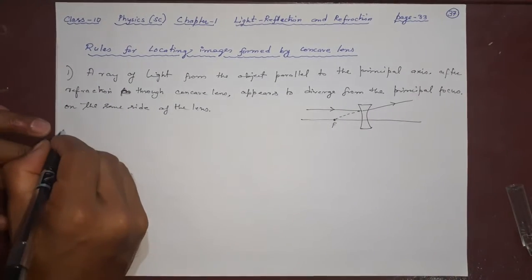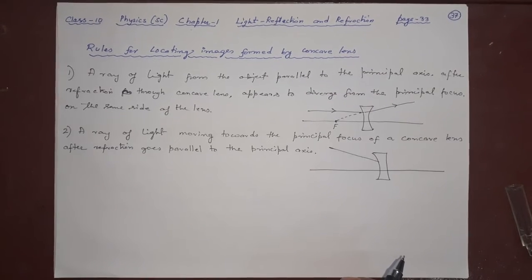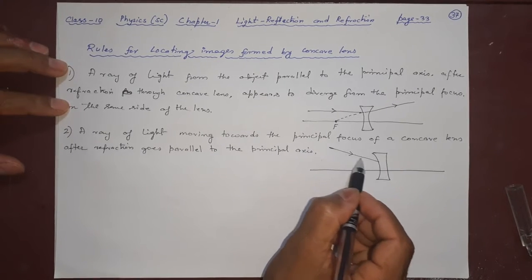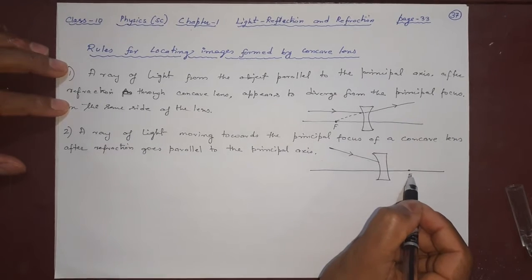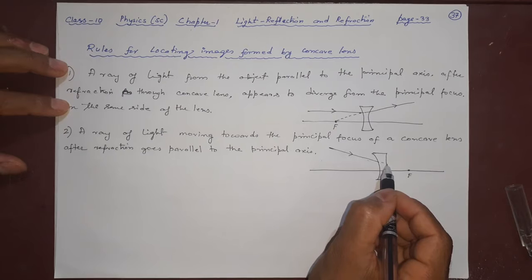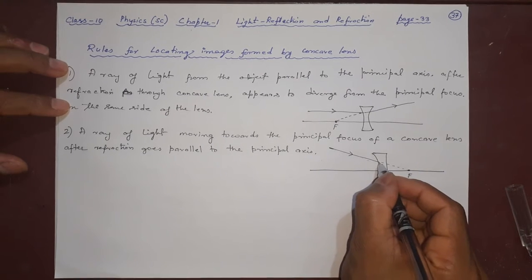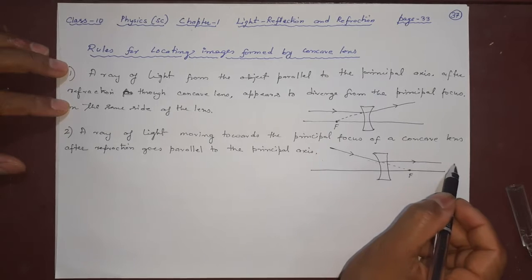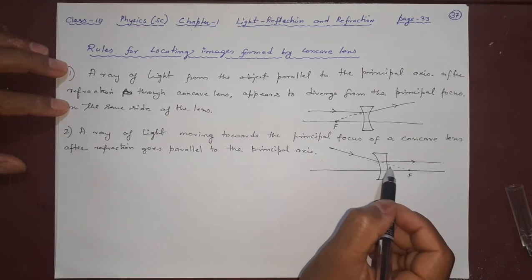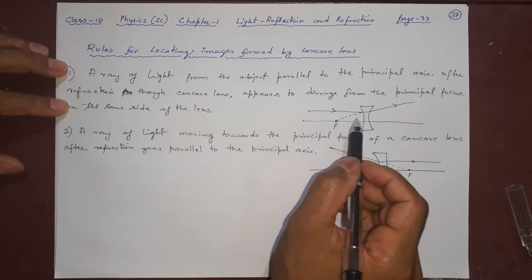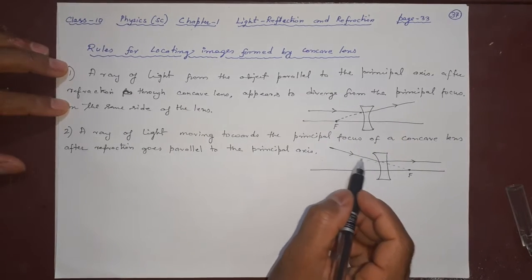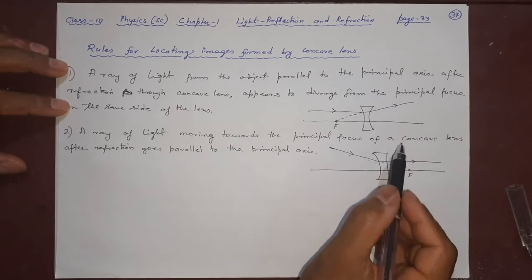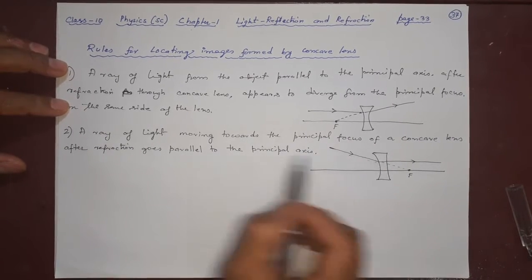The second rule says: a ray of light moving towards the principal focus of a concave lens — if it is going toward the focus like this, it cannot actually go there, but the lens will diverge it parallel to the principal axis. So a ray of light moving towards the principal focus of a concave lens, after refraction, goes parallel to the principal axis.